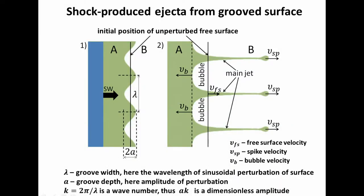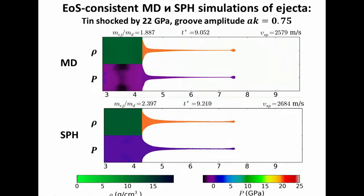Due to geometry, if it's a linear groove we should have a planar jet, but if the surface feature looks like a cone, we get a liquid cylindrical jet. They decay in very different ways. We know very well how a cylindrical jet decays, but the planar jet may need additional study.